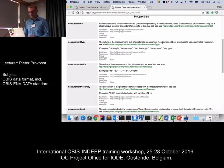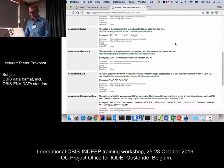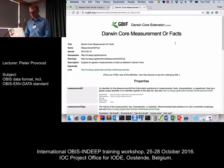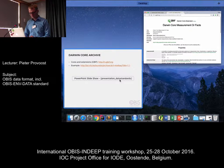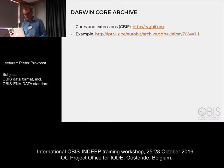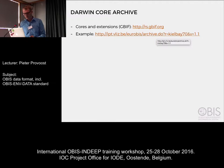In a measurement or fact table you can put measurement type, value, accuracy, units, and so on. I'll just show you one example of a Darwin Core archive file. This is one that's on the EurOBIS IPT. I've downloaded the archive — it's a zip file, so I can just extract it — and it contains four files. The first one is the archive descriptor.